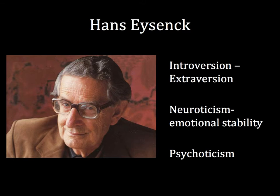Eysenck initially believed that these first two dimensions, when combined, could be used to classify people into four basic types — a person might be introverted neurotic, or extroverted stable, for example. In later research, he would develop a third dimension, psychoticism, the extent to which a person was concerned or unconcerned about others. In 1990, one of Eysenck's last published papers outlined his belief that differences in personality were ultimately due to biological differences between people.